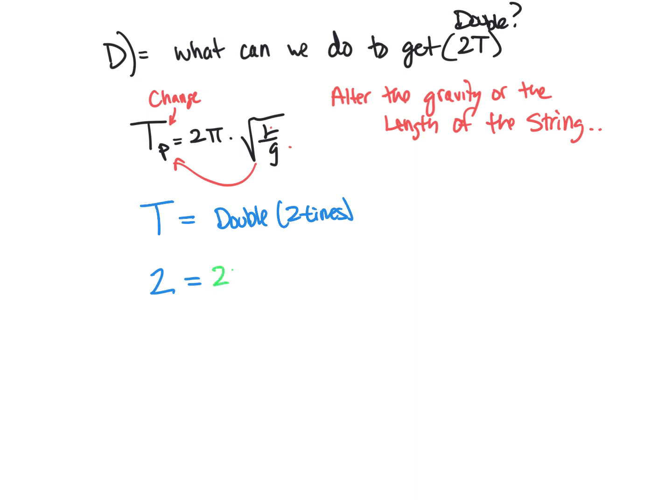So what I mean is, we have 2 pi here times square root of L over G. So anything that's a constant, we are going to just get rid of. So example, 2 pi is a constant, and let's say we're staying on Earth.